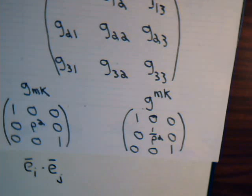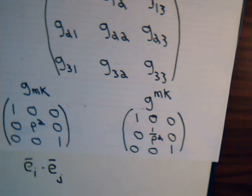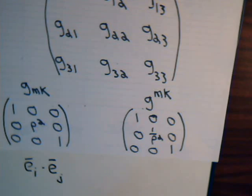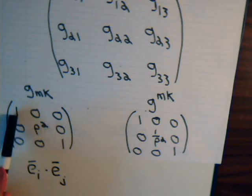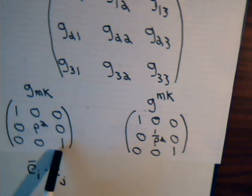Now, with cylindrical coordinates, and also with spherical coordinates, these are orthogonal to each other. So, you get zeros, unless you're taking the dot product of a tangential vector with itself. And then we'll get non-zero elements on the diagonal. So, in cylindrical coordinates, g11 is 1, g22 is rho squared, g33 is 1.